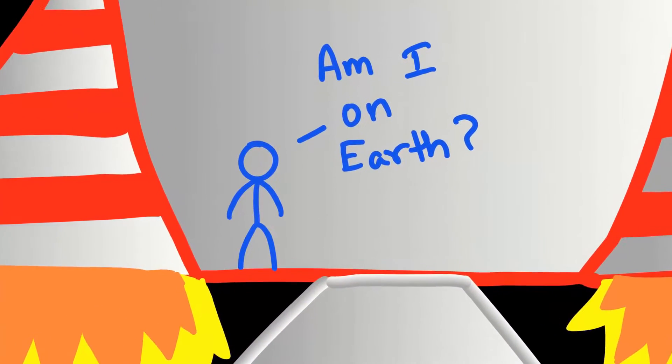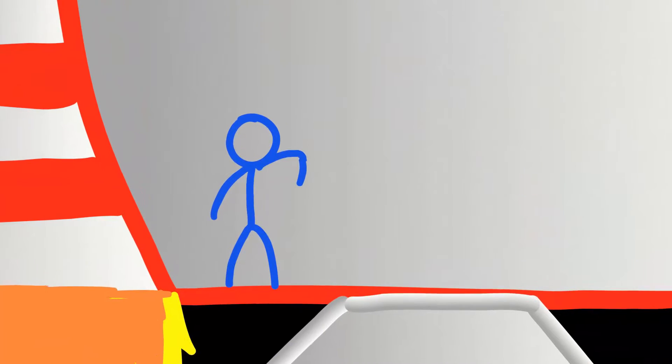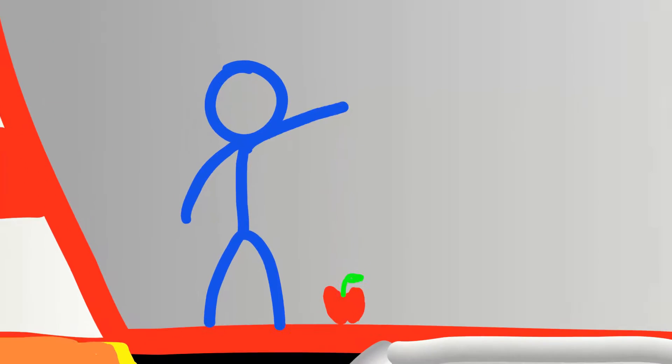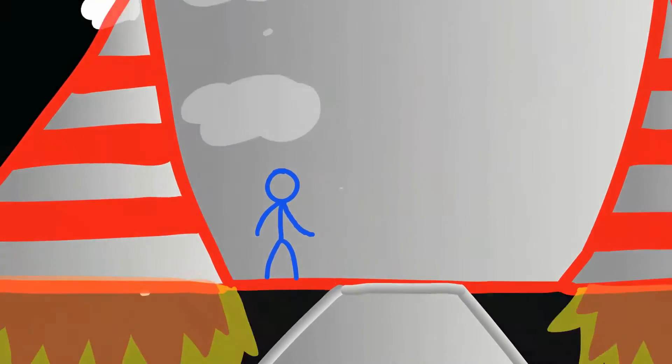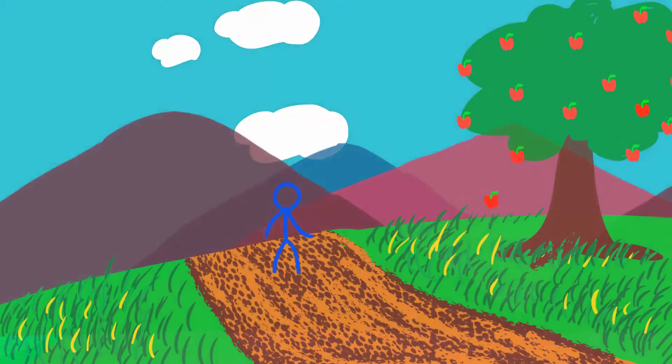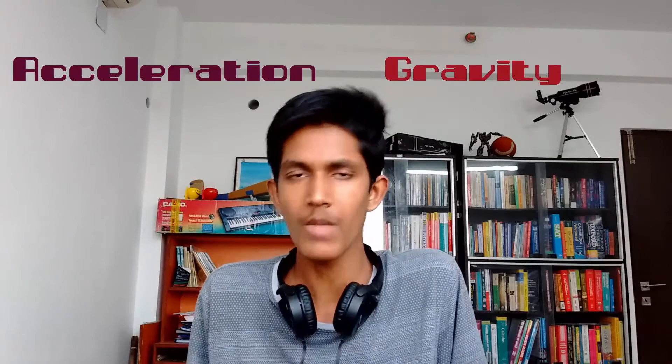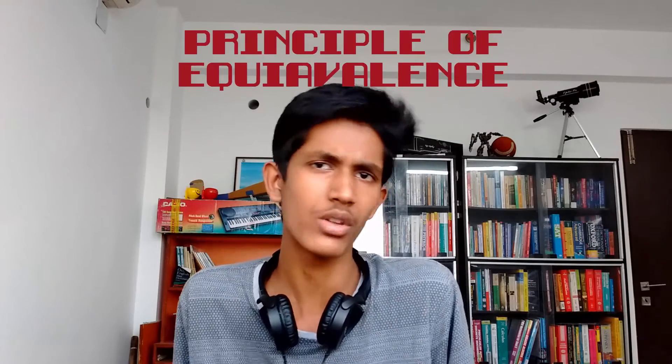So to test that theory, he holds out an apple and lets it go. It simply drops to the floor. So Sal now doubts whether he really is in an accelerating rocket or if he is standing right on Earth. So basically, this simple experiment proved us that one cannot tell the difference between acceleration and gravity. And this is called the principle of equivalence.